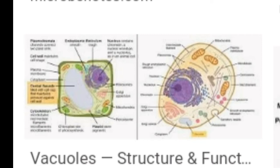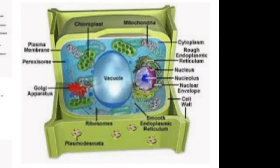In plant cells, vacuoles contain dissolved food materials, waste products, and pigments. In animal cells, vacuoles engulf solid or liquid matter. Vacuoles may be smaller or large; the organelles are filled with a liquid or sap and are membrane-bounded. In animal cells, vacuoles are smaller in size and lesser in number than in plant cells.